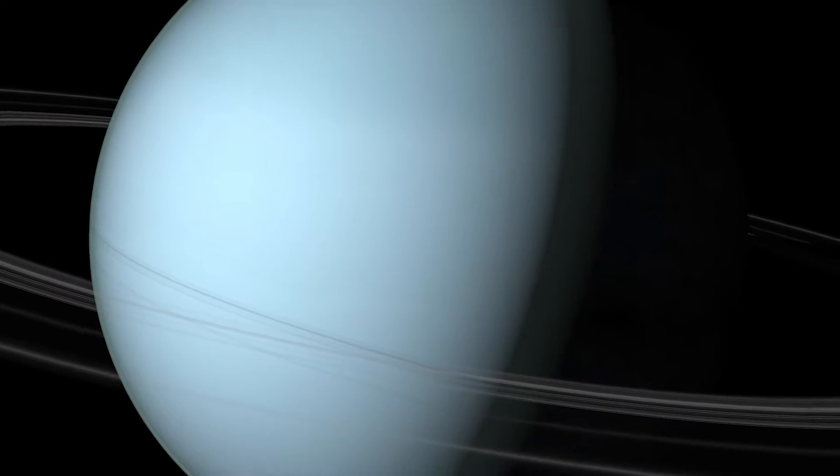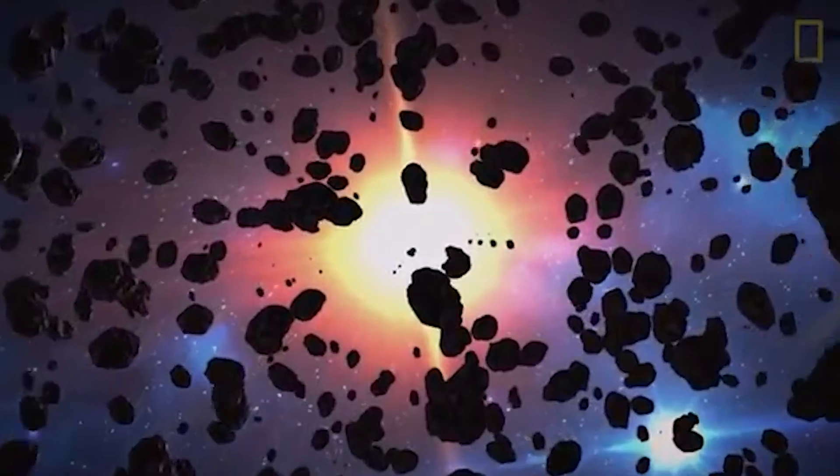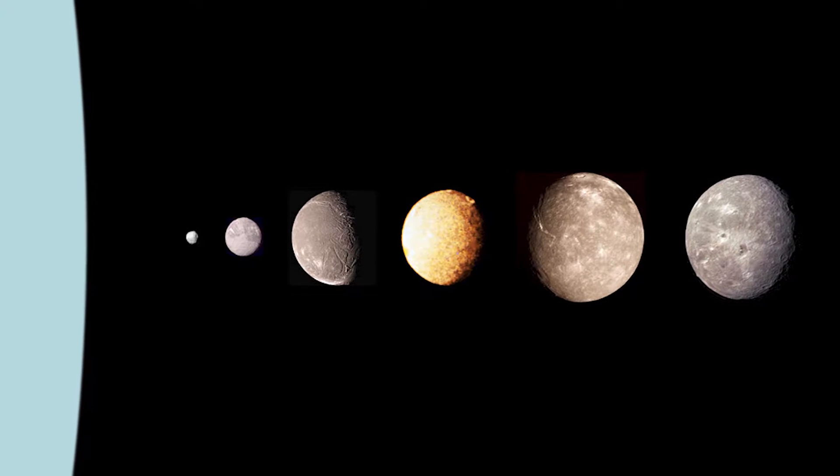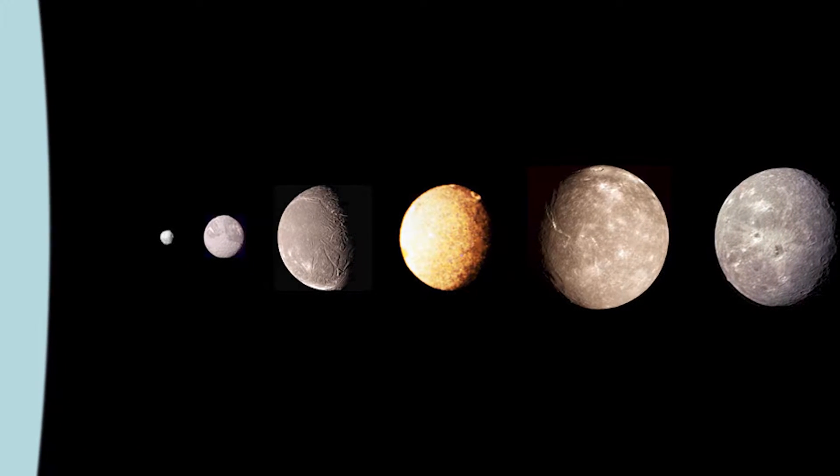For a long time, scientists thought that Uranus was tilted due to a single impact from a celestial object billions of years ago. Scientists often look at the moons of Uranus to try and determine if any remnant from said object still remains.